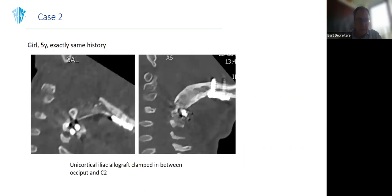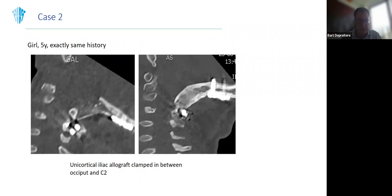Case 2: a five-year-old girl with a similar history. I illustrate the allograft technique: I cut an iliac bone allograft in a customized way and clamp it between the spinous process of C2 and the occiput. This works quite well — you can see it nicely fuses there, protecting the construct.